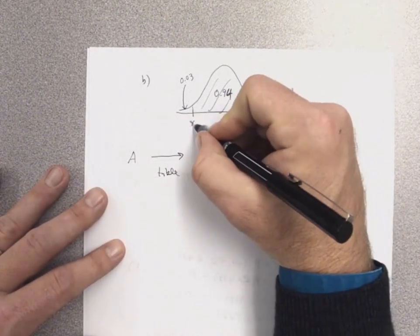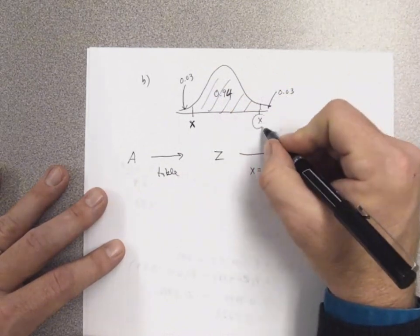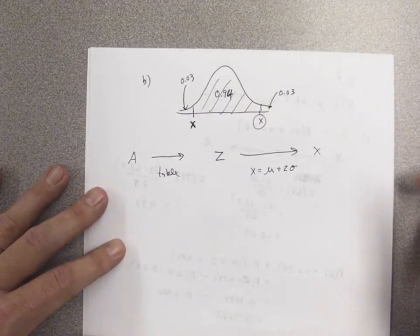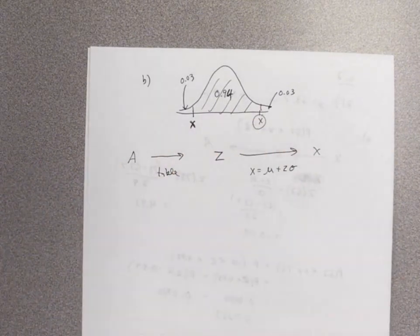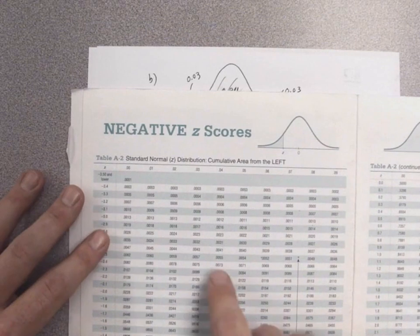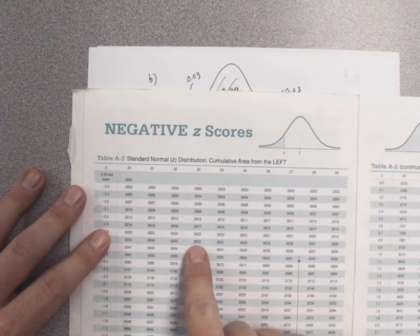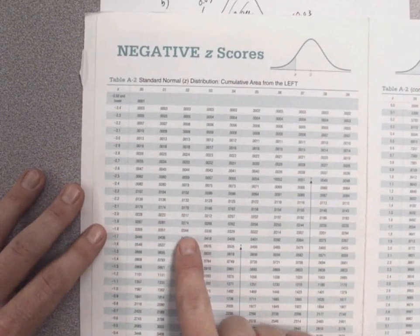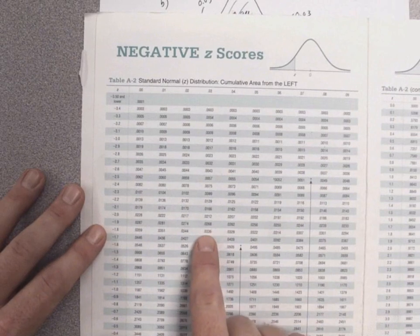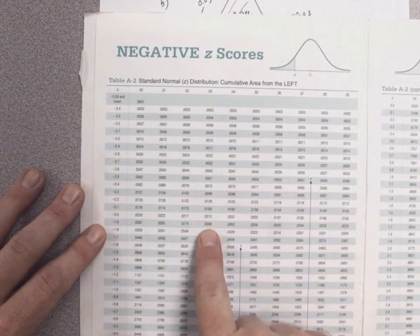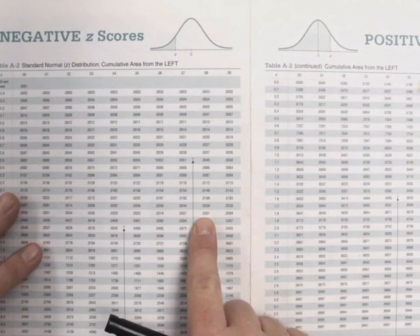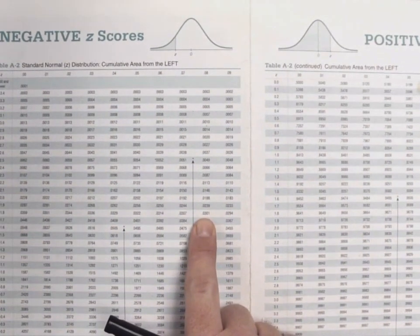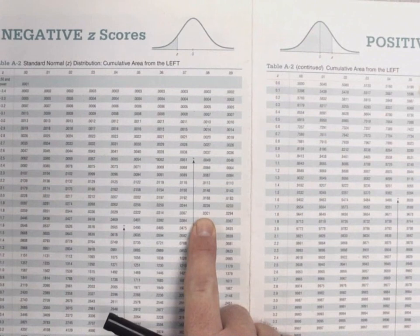By symmetry, if we find the lower cutoff z score, the upper one will be its positive counterpart. Looking in the table for a value closest to 0.03, I find 0.0301. Tracking that back gives a z score of negative 1.88.